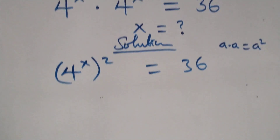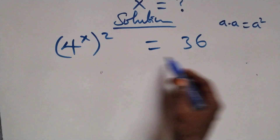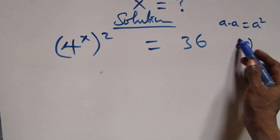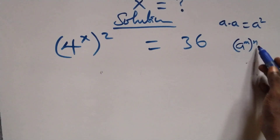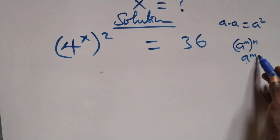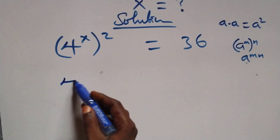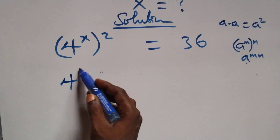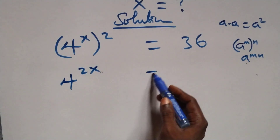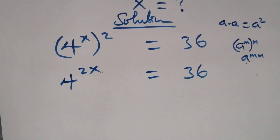From here, this follows when we have a raised to power m, raised to power n — this is the same thing as a raised to power m times n. So the powers multiply and we have 4 raised to power 2x equals 36.